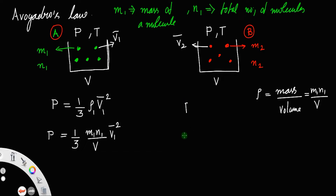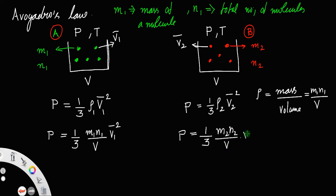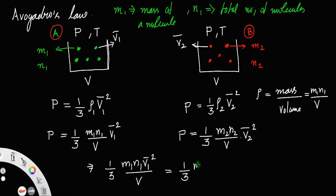Similarly, pressure in the second beaker is P = 1/3 · (m2·n2 / V) · V̄2². Since pressure remains constant and equal in both containers, we can equate the two expressions and cancel the 1/3 and the volume V from both sides.